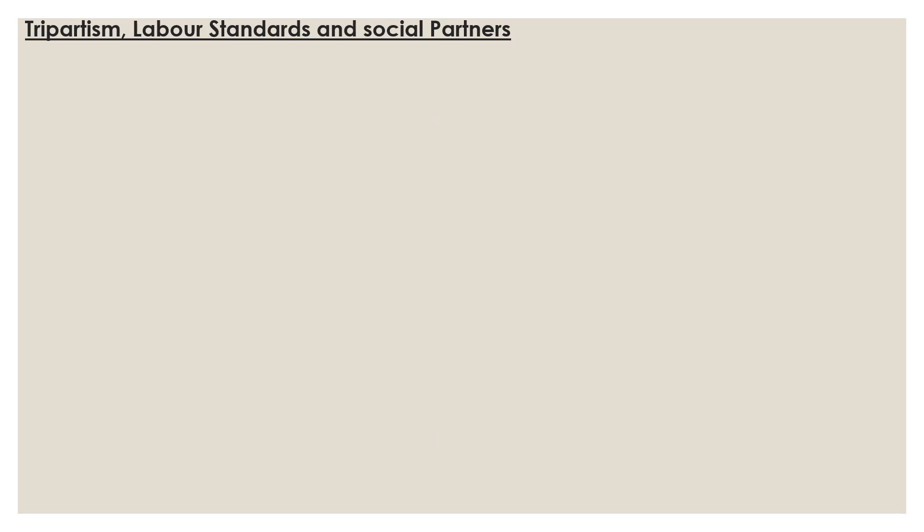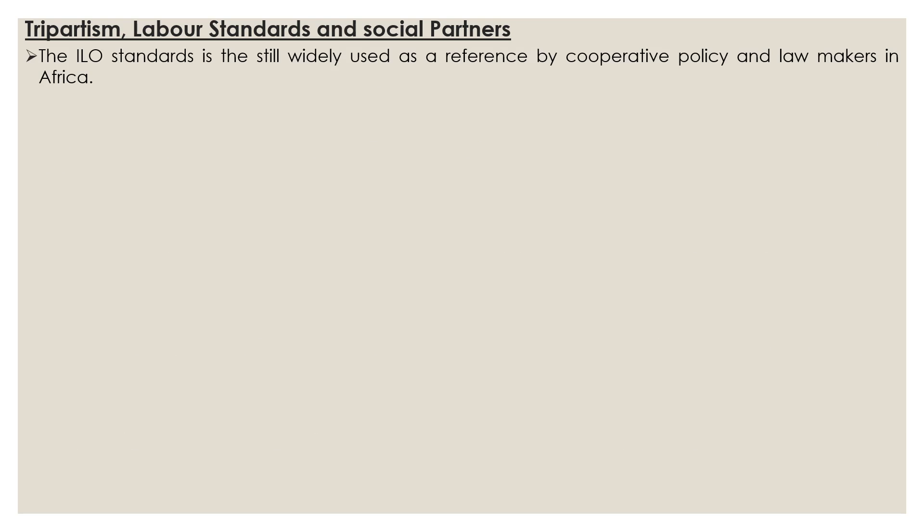Tripartism, labor standards, and social partners — this is a sub-main heading in which we will be discussing about the various labor standards and how these standards help in improving the condition of the labor or workforce within the cooperative unit, and the various social partners that have taken initiative for the upliftment of weaker sections. Tripartism means involvement of three sets of groups.